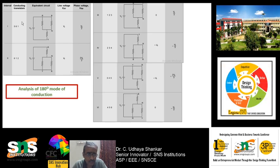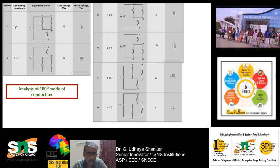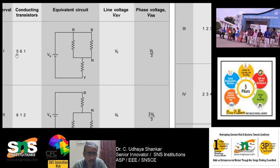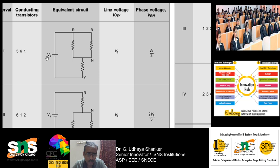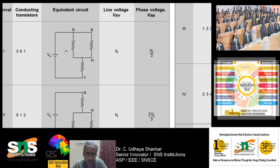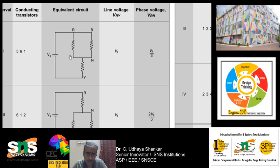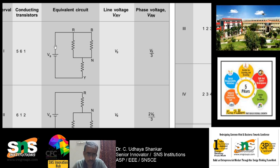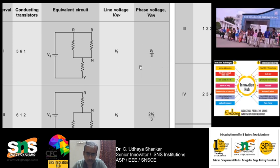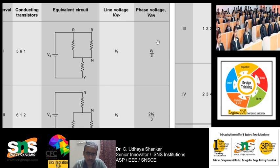When 5, 6, and 1 are on, calculate the output voltage. The line voltage V_RY will be V_S. The phase voltage V_RN — applying Kirchhoff's voltage law — will be V_S/3, because all three phases are involved. When switching sequence 6, 1, 2 is active, the line voltage will again be V_S and the phase voltage will be 2V_S/3. In the third interval (1, 2, 3) the line voltage will be 0 and the phase voltage will be V_S/3. You can just refer to the book for further intervals; by applying Kirchhoff's voltage law you will get the different voltages for different intervals.